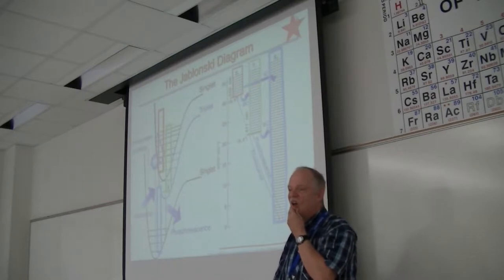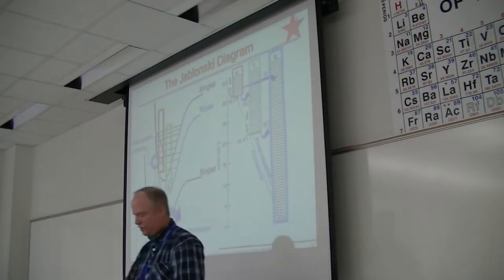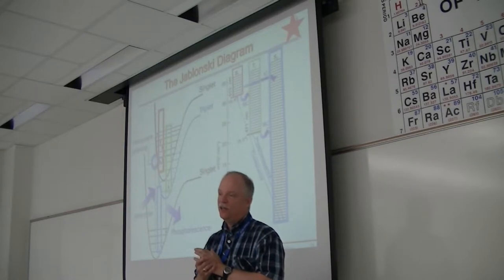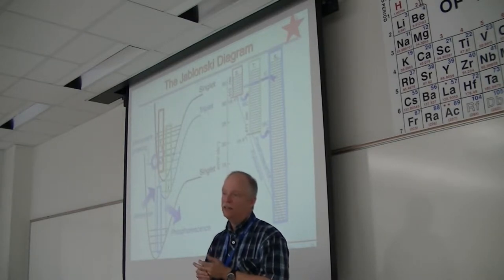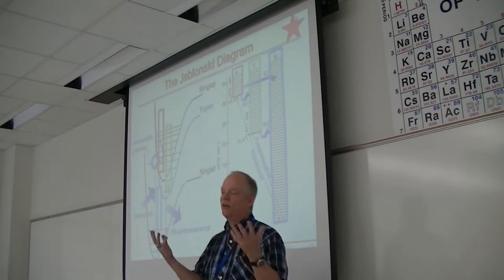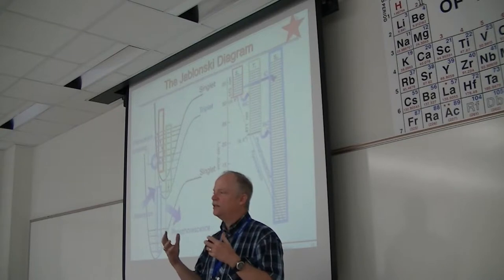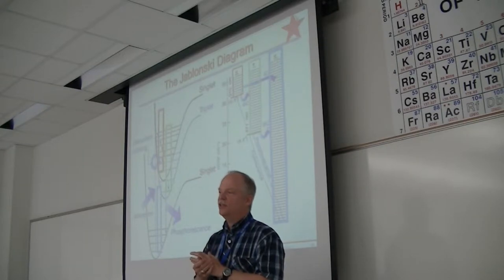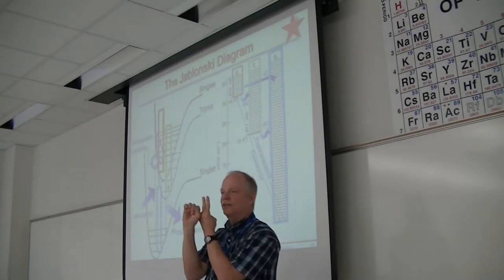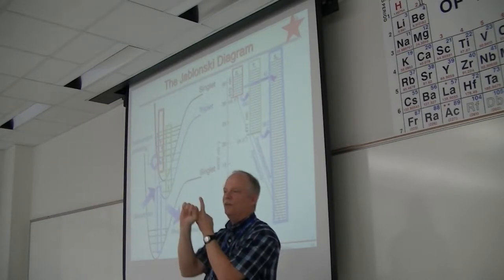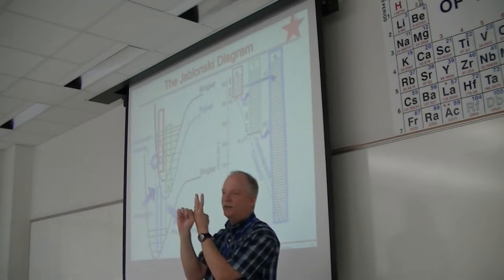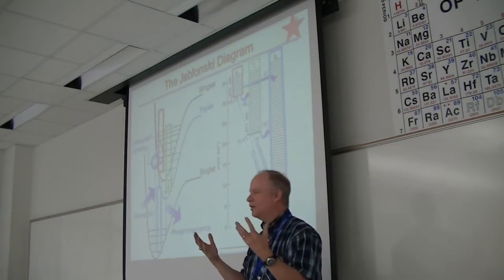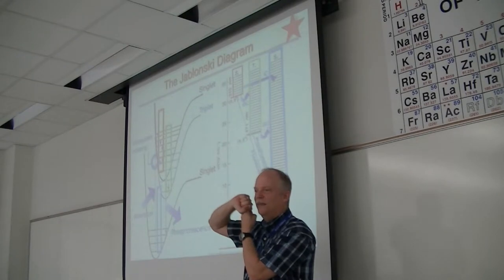We talk about singlets and triplets because most molecules have an even number of electrons. But if they have an odd number of electrons, you can have doublets and quartets. If you've got three unpaired electrons, you have a quartet. An electron has spin one-half — multiply by two and add one. If it's a triplet, it has two unpaired electrons; if it's a doublet, one unpaired electron; if it's a quartet, three unpaired electrons. If it's a singlet, it has zero unpaired electrons. You can go right to the number of unpaired electrons if you know the multiplicity.